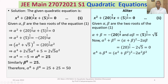Next, alpha power 4 plus beta power 4 equals alpha squared plus beta squared whole squared minus 2 times alpha squared beta squared. Substituting the values, we get 0 squared minus 2 times alpha squared beta squared. Since alpha beta equals root 5, alpha squared beta squared equals 5, so this gives 0 minus 2 times 5, which is minus 10.